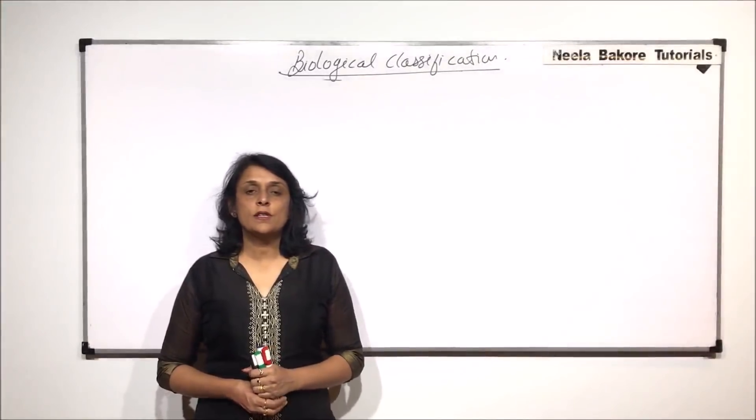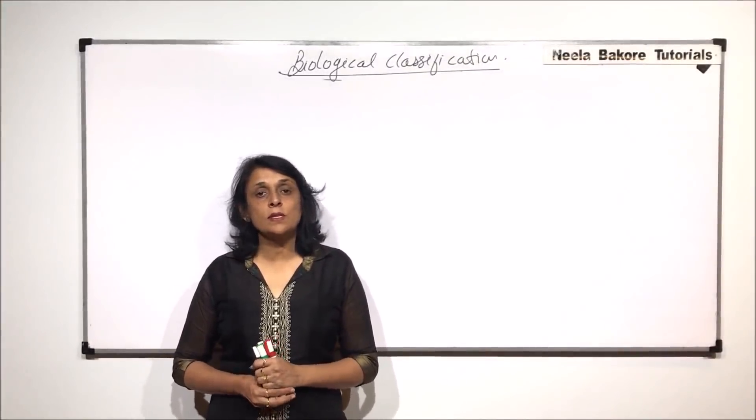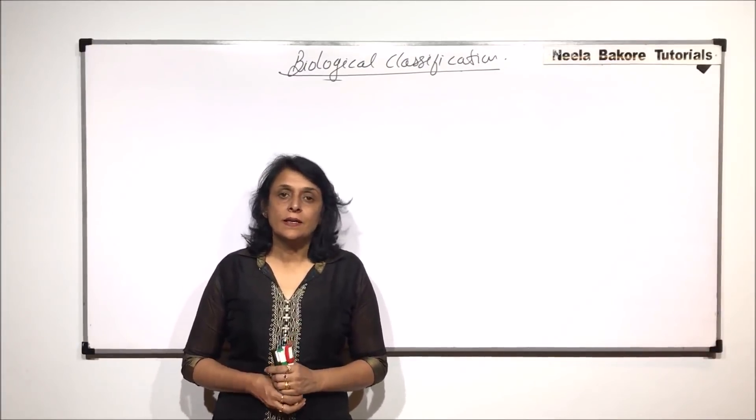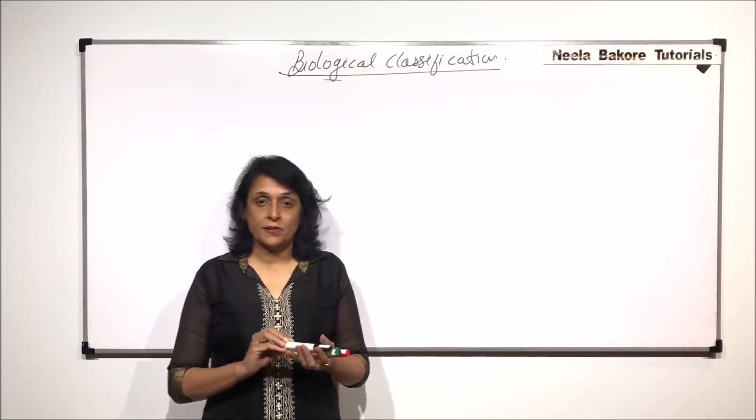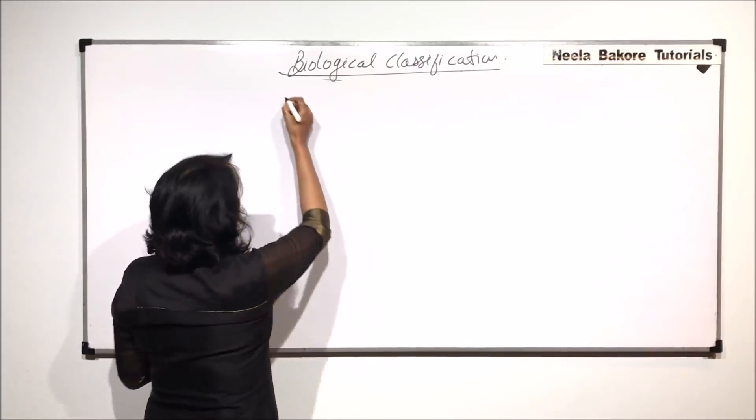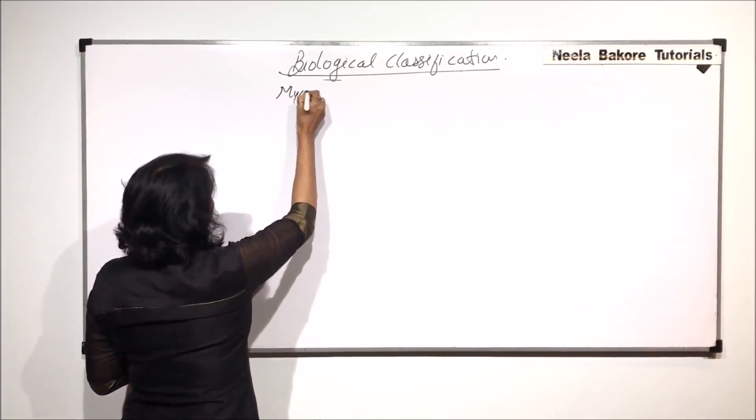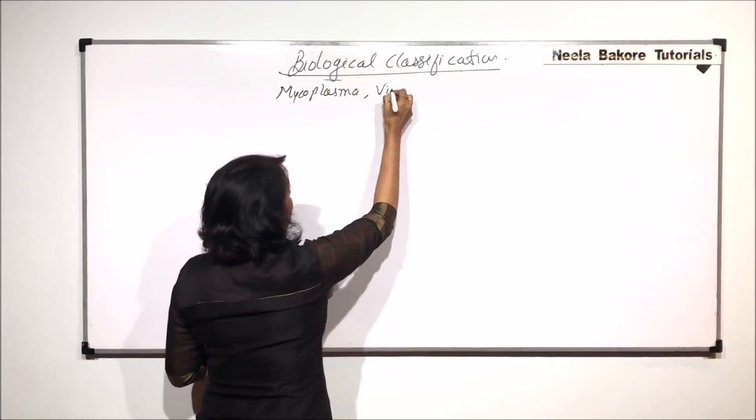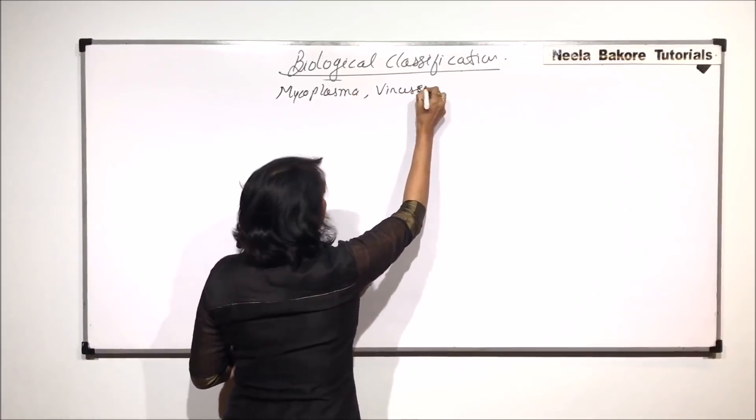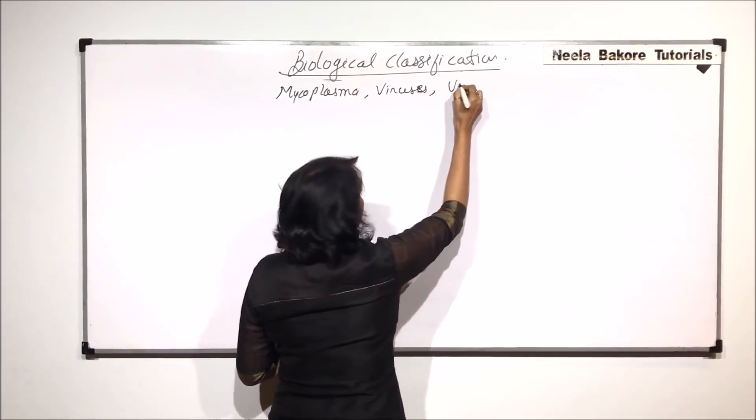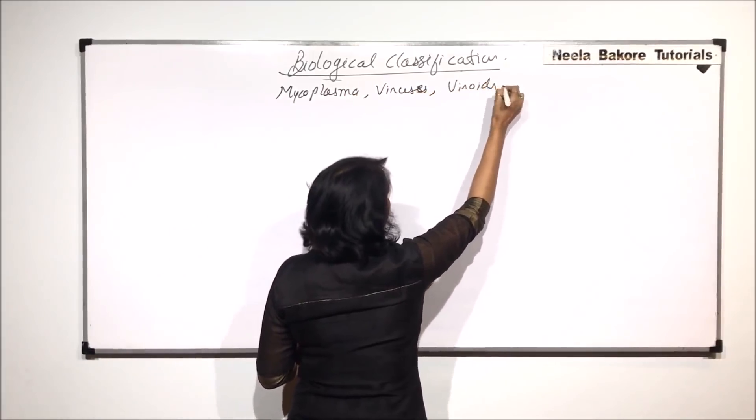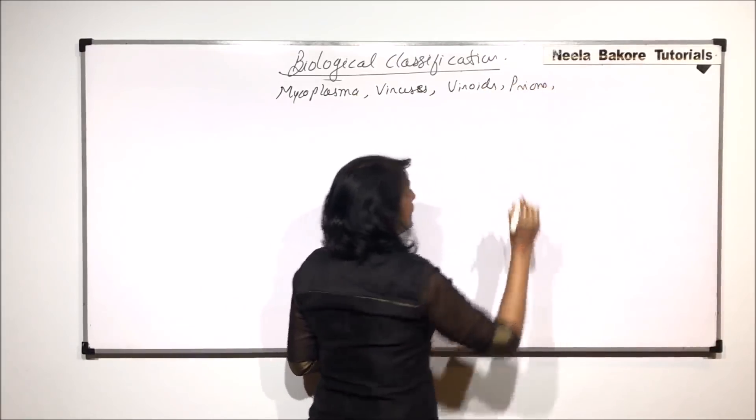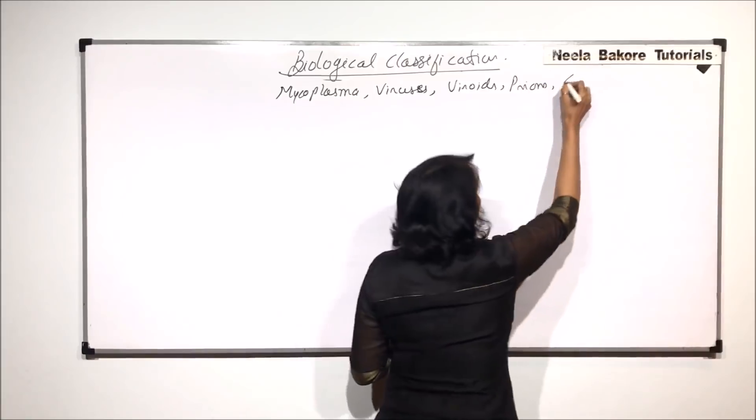In this video we will discuss certain organisms which are smaller than bacteria and certain other disease-causing particles. We will be talking about mycoplasma, viruses, viroids, prions, and lastly lichens.